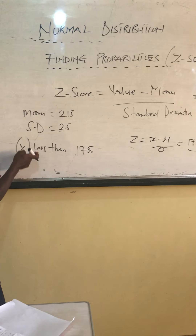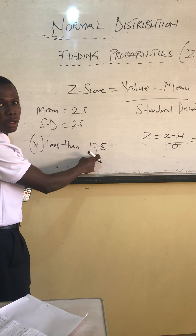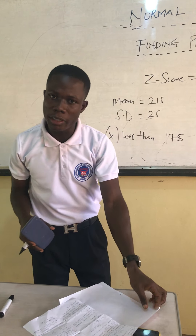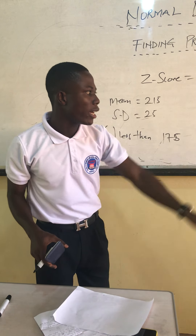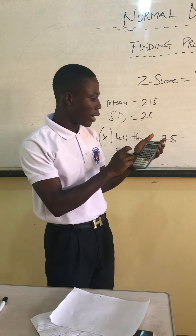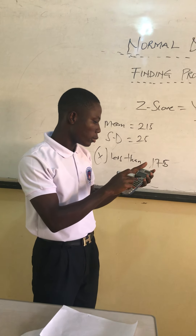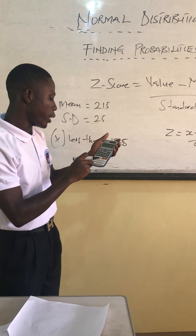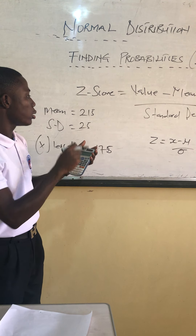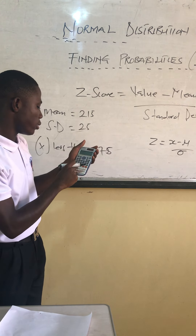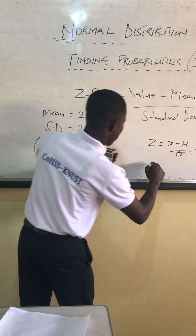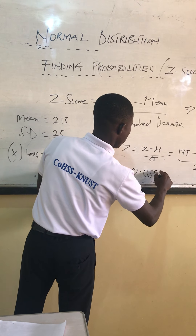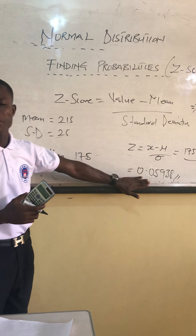Negative 1.56 is not yet our final answer. Because the value is less than 175, we find the area on the left of Z. Finding negative 1.56 on the table using my calculator gives 0.0594. So 0.0594 is my final answer.